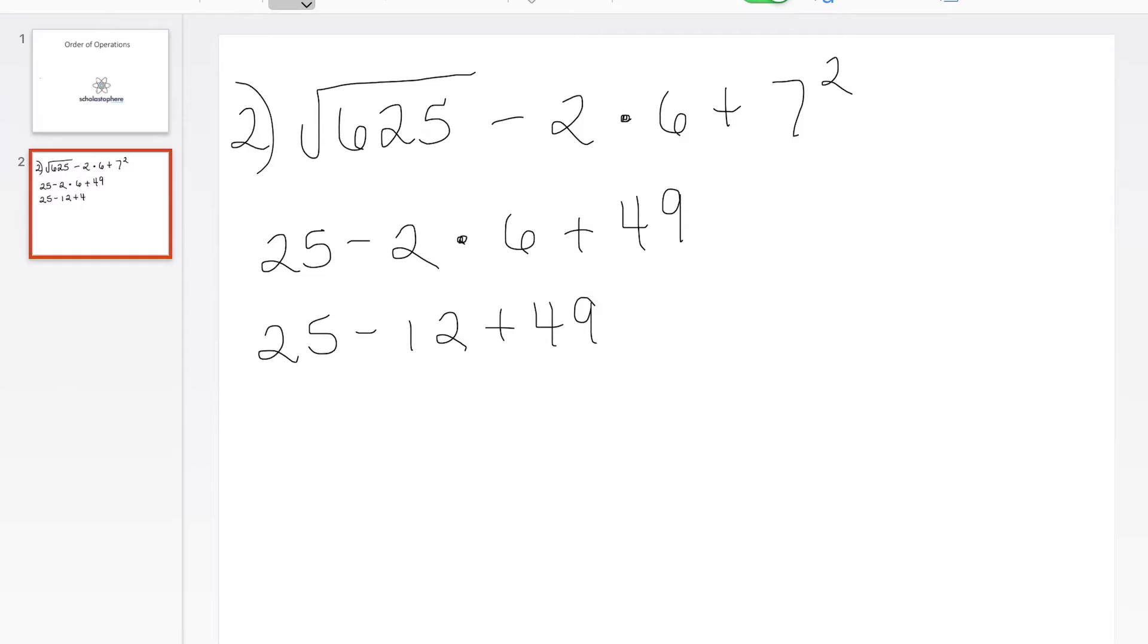Now that the new sentence should state 25 minus 12 plus 49, we have to look and see what operations are left and which one takes priority in order to solve the problem. So we have a subtraction sign, and we have an addition sign. So according to our acronym, the addition sign comes before the subtraction sign.